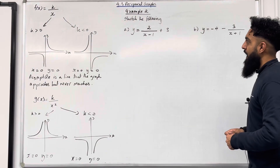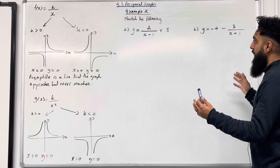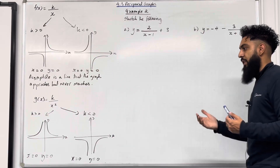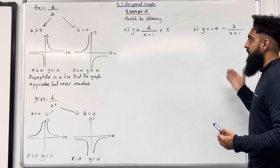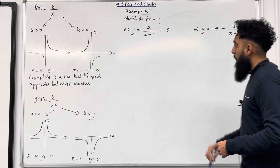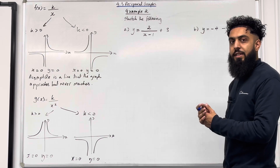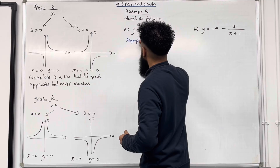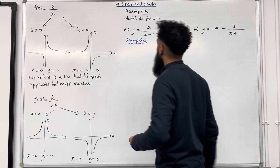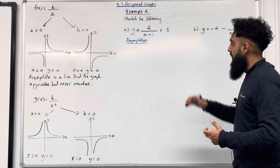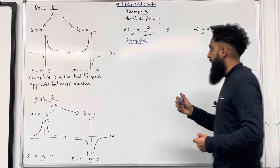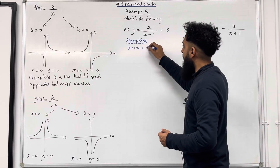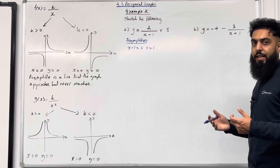Let's have a look at example 2: sketch the following parts A and B. A and B represent reciprocal functions transformed — the asymptotes have been shifted. In the examination you could be asked to sketch these type of graphs. Starting with part A, the very first step is to identify the asymptotes. To work out the x asymptote, set the denominator equal to 0: x minus 1 equals 0, solving gives x equal 1. That is my x asymptote.